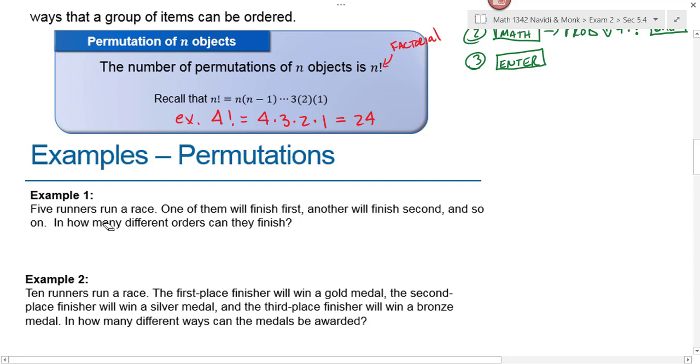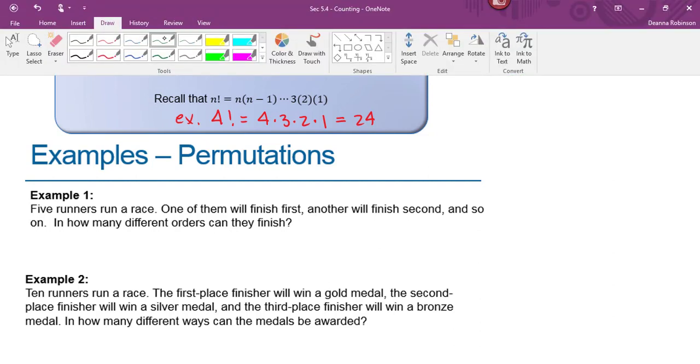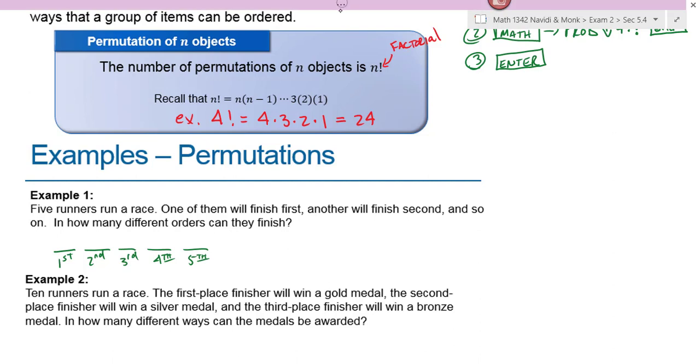Example 1 says five runners run a race. One of them will finish first, another second, so forth and so on. In how many different orders can they finish? So I've got five runners and I want to know all five positions—where do all five of them end up? If you wanted to use the counting principle, I would draw five blanks. Here's first place, second place, third place, fourth place, and then fifth place.